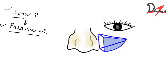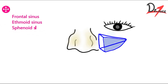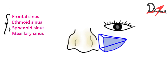Now we need to know how many sinuses are around the nose — how many paranasal sinuses do we have. There are four types of paranasal sinuses; some are paired and some are single. We have the frontal sinus, the ethmoid sinus, the sphenoid sinus, and the maxillary sinus. These are the four sinuses present around the nose.